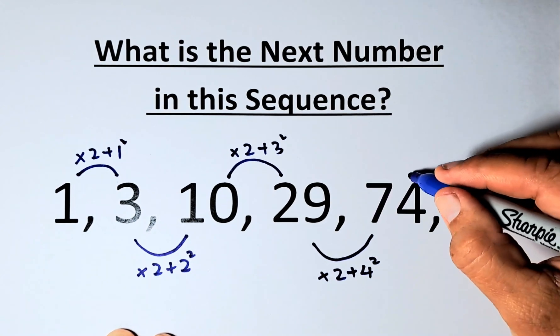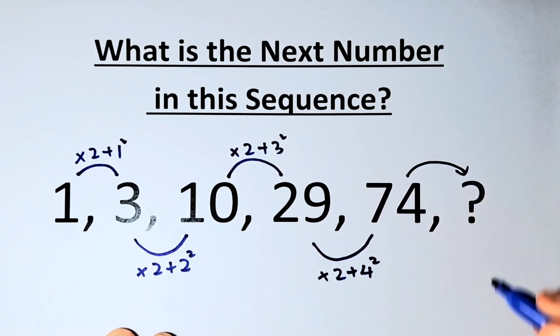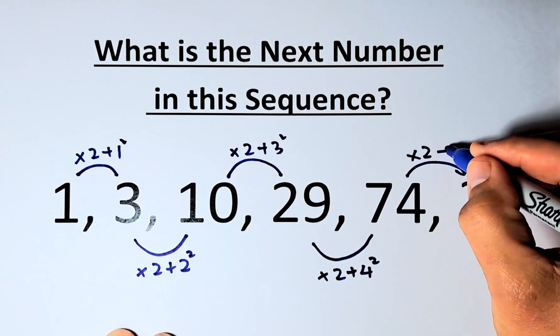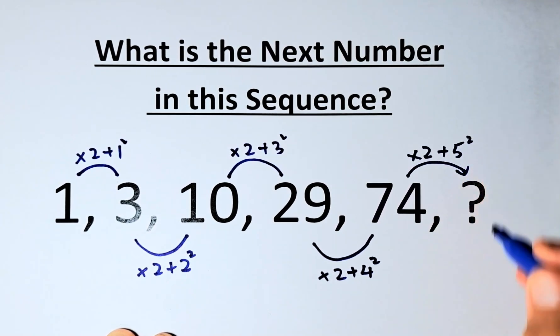And last but not least, we have to get from 74 to the question mark. The pattern is going to multiply by 2 and this time we're going to add 5 squared.